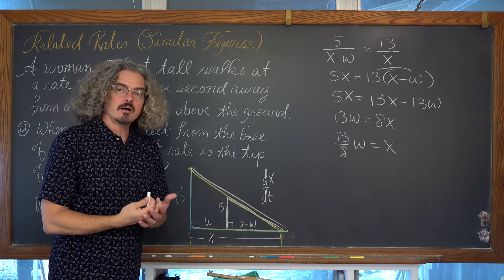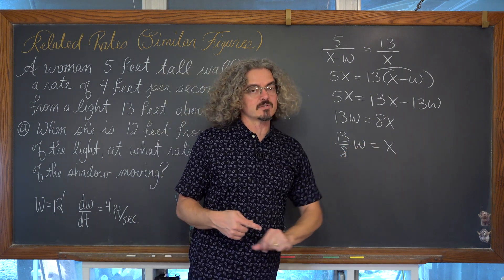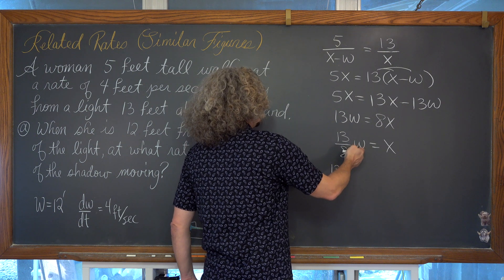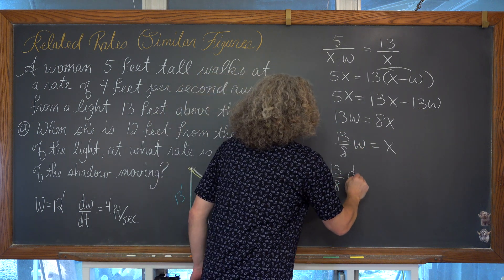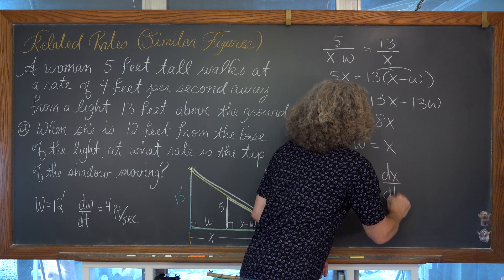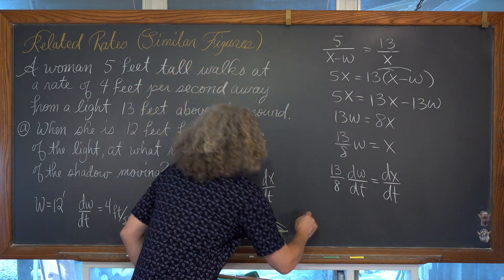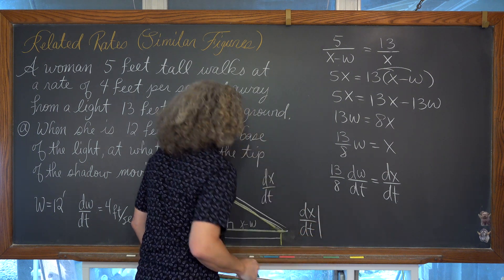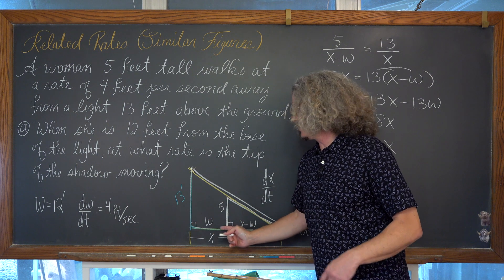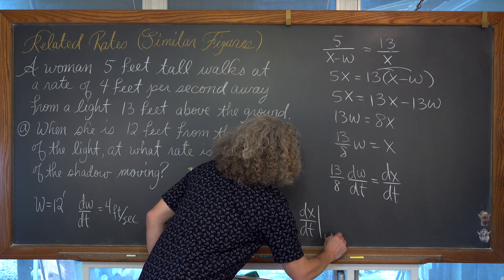Now we bring motion into the problem by taking the derivative of both sides with respect to time. We get (13/8) times dw/dt equals dx/dt. We're being asked to find the derivative of x with respect to time when she is 12 feet from the base of the light, which is when w equals 12.